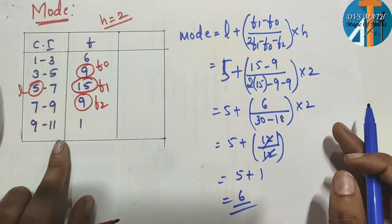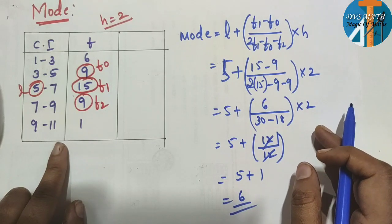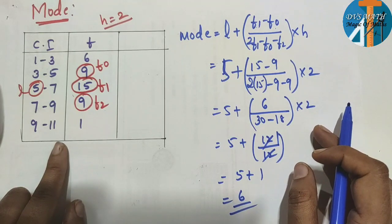Simple mean, median, and mode — easy 3 marks each.